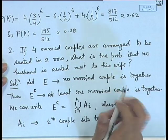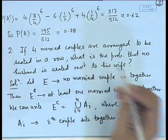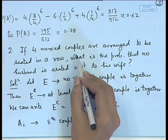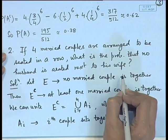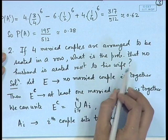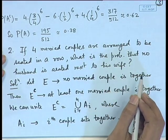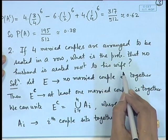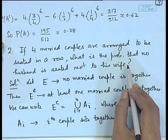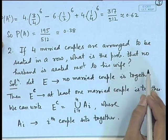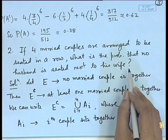Let us look at another application of the general addition rule. If 4 married couples are arranged to be seated in a row of 8 persons at a long table, what is the probability that no husband is seated next to his wife? If we label the pairs 1, 2, 3, 4 and analyze directly, the possibilities — husband 1 next to wife 2, husband 1 next to wife 3, husband 3 next to wife 4, and so on — are too many; it becomes an enumeration problem.